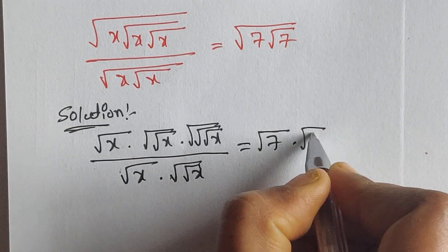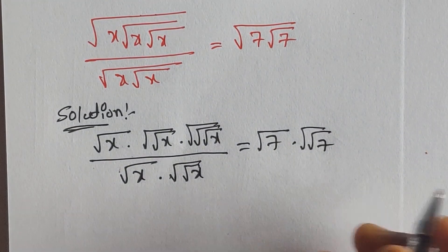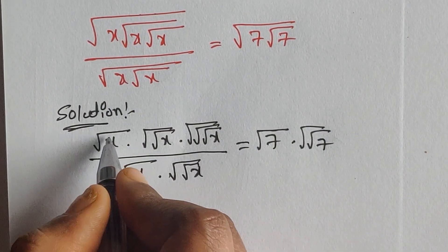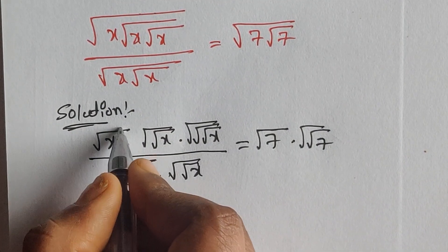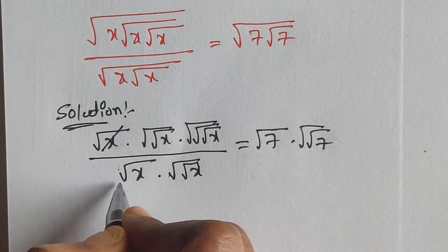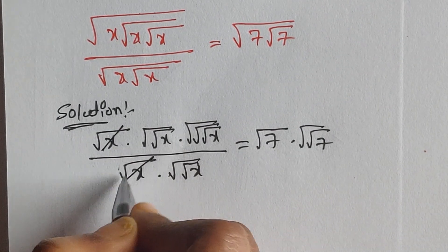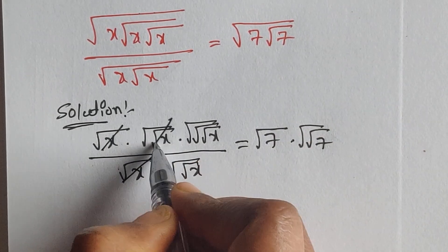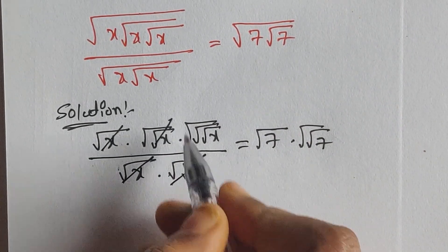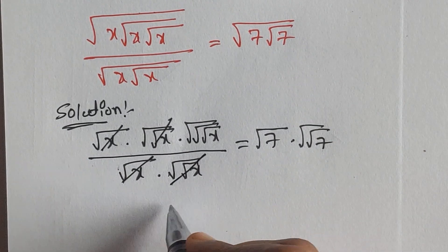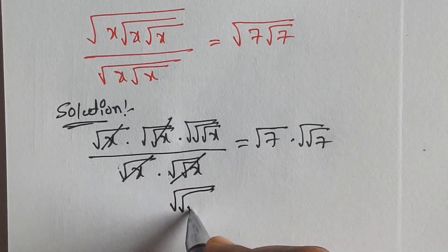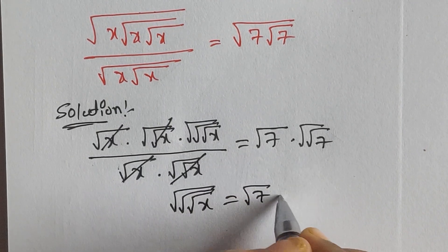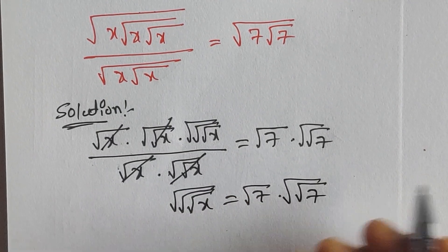This equals square root of 7 times square root of square root of 7. Now in the numerator we have square root of x, and in the denominator we also have square root of x, so both get cancelled. Similarly, square root of square root of x in numerator and denominator get cancelled. So we are left with square root of square root of square root of x equal to square root of 7 times square root of square root of 7.